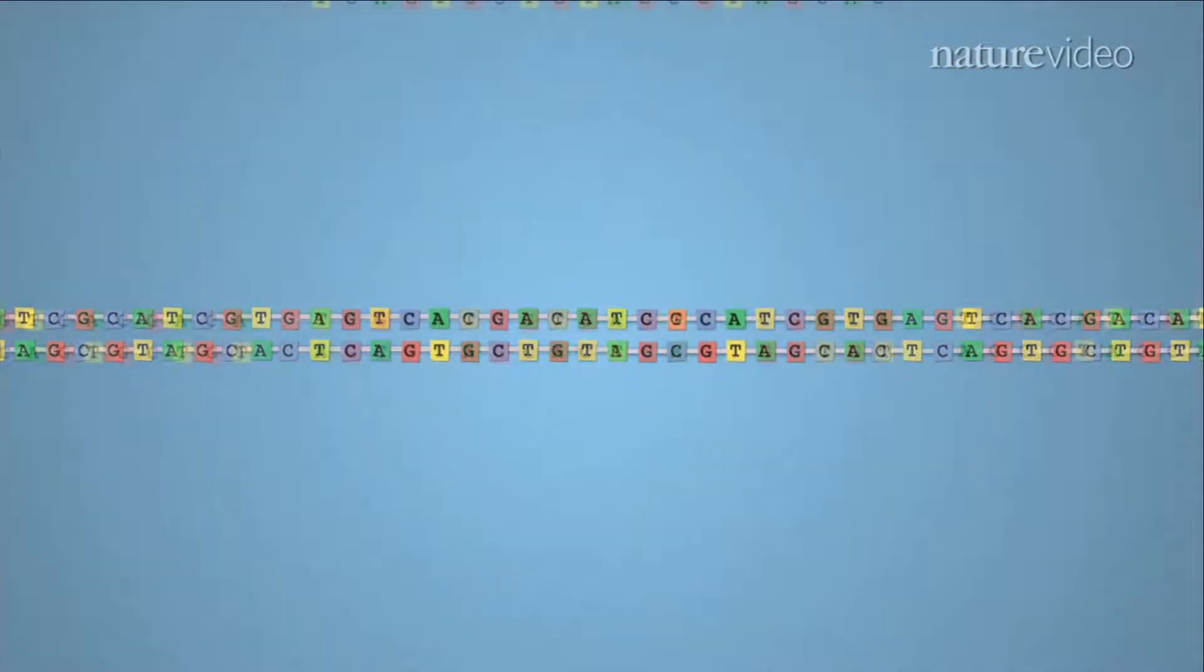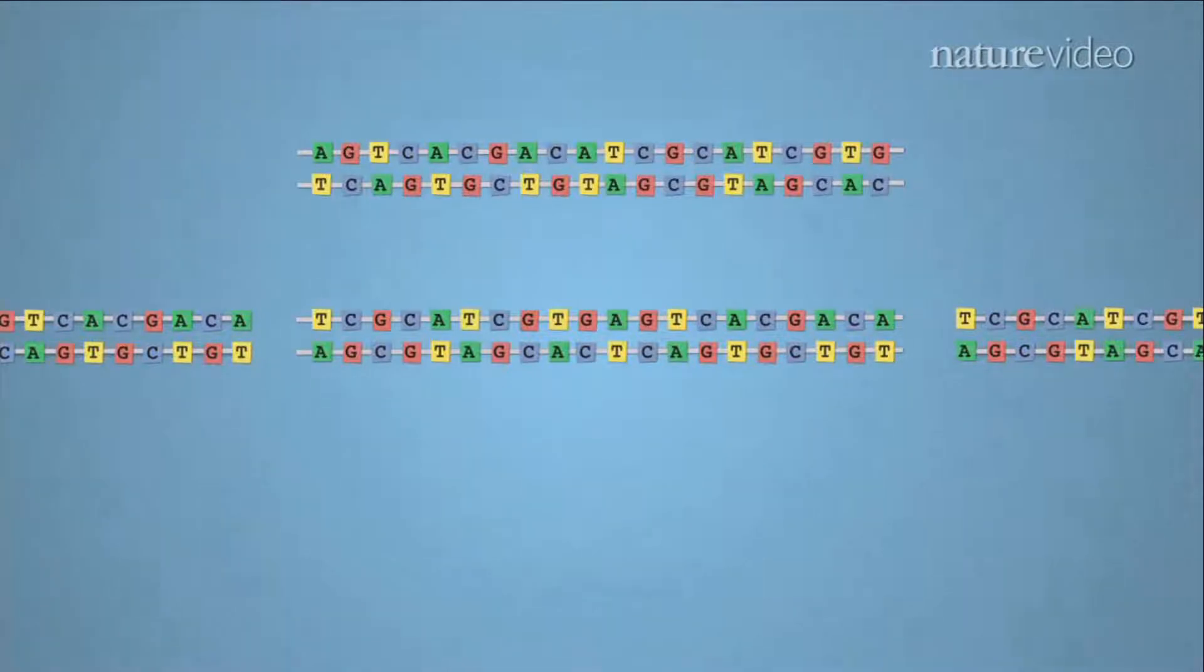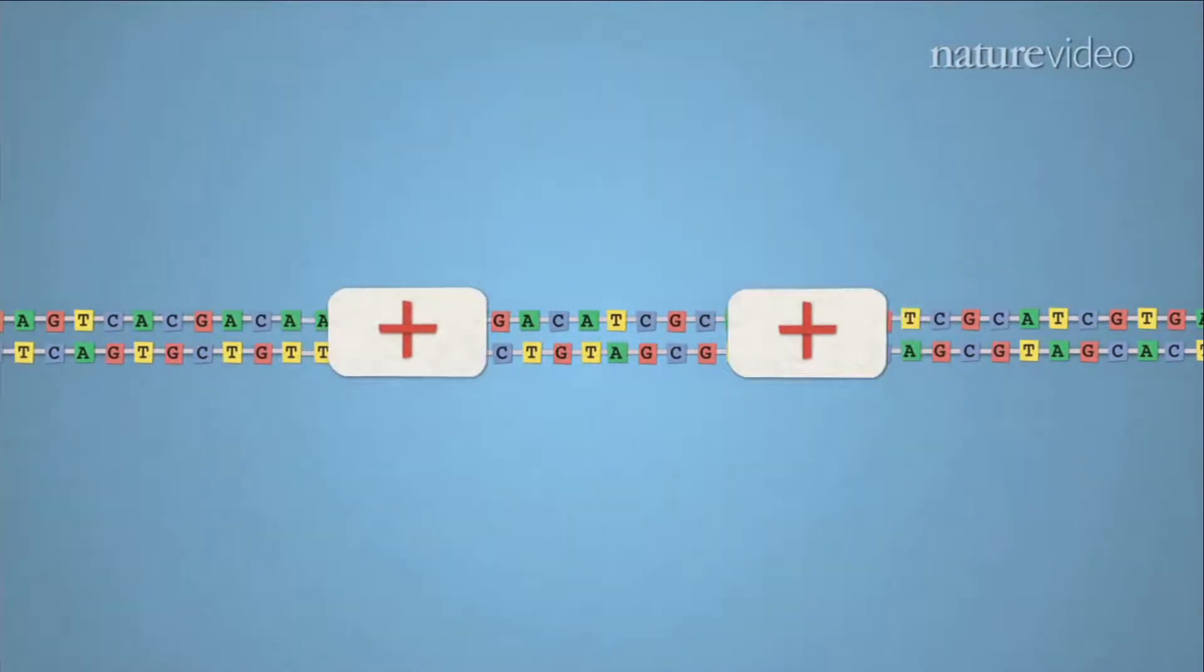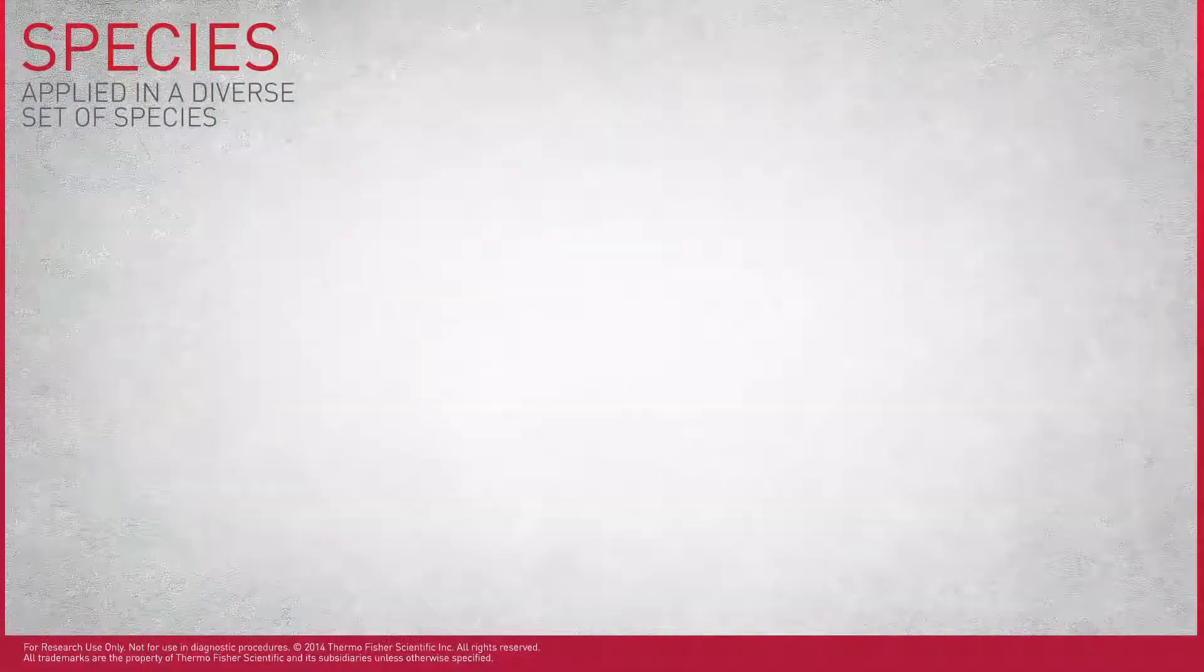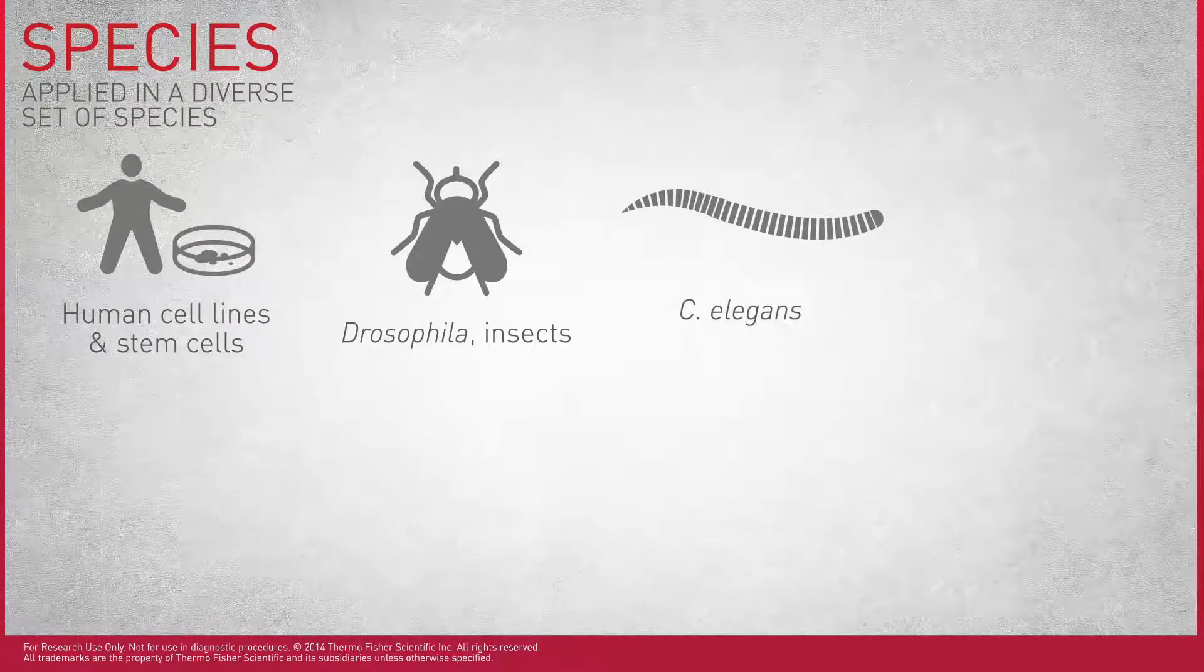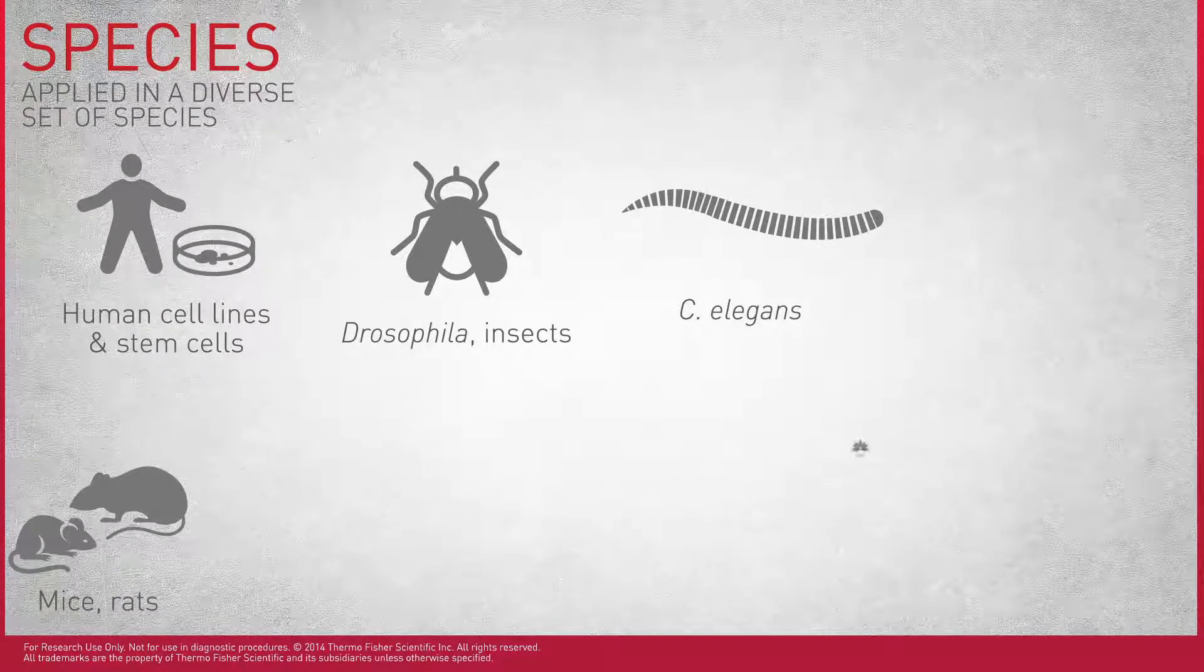Recently, scientists discovered that CRISPR is programmable, meaning that we can give the Cas9 protein a copy of DNA that we specifically want to modify. What's great is that CRISPR does not only work with bacteria, but it also can be applied with microorganisms, plants, animals, and even humans.